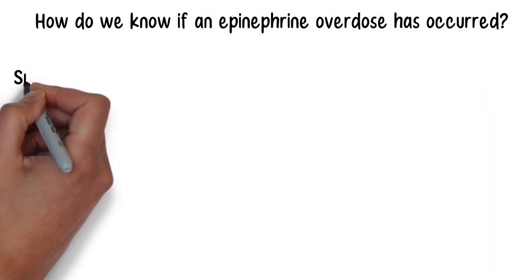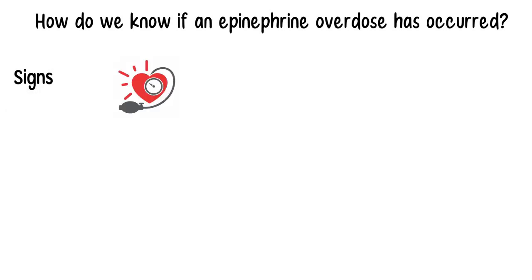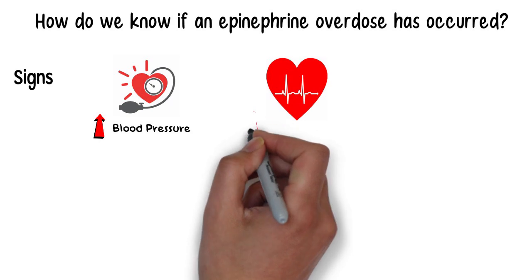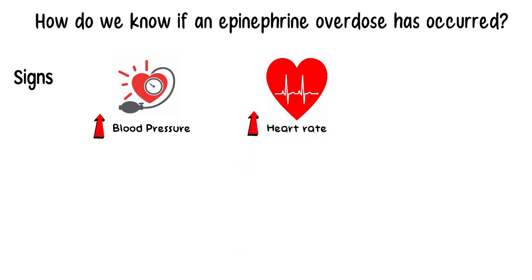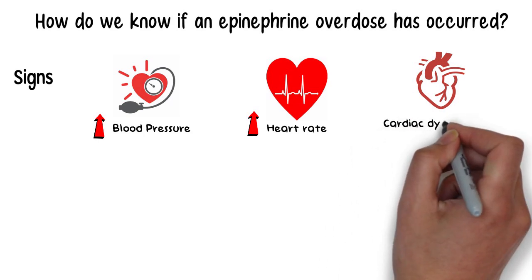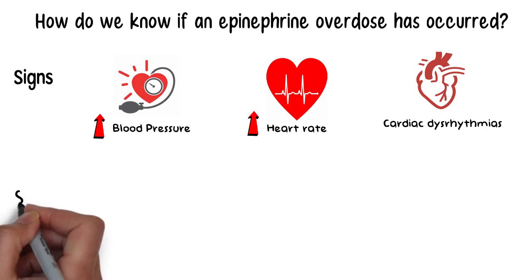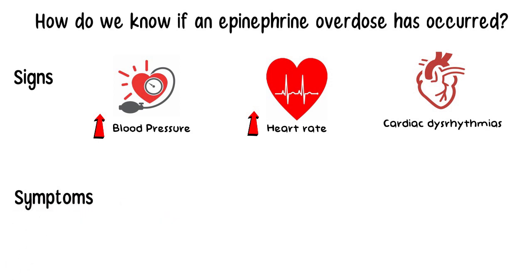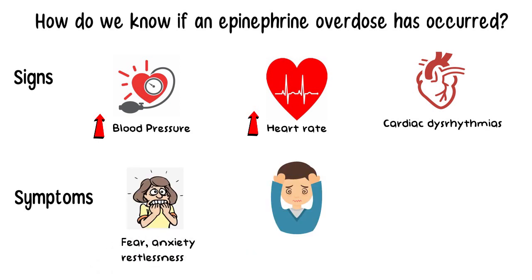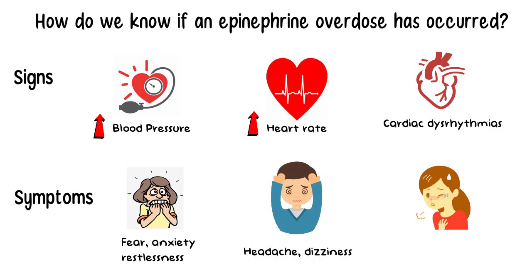The signs that help you diagnose epinephrine overdose in a patient may include a sharp elevation in blood pressure, primarily the elevation in systolic blood pressure. The patient may also have an elevated heart rate, and there may even be possible cardiac dysarrhythmias, as epinephrine can directly affect the cardiovascular system. Symptoms presented by the patient may include a sense of fear, anxiety, and restlessness. The patient may complain of a throbbing headache, perspiration, and difficulty in breathing, as well as weakness and dizziness.